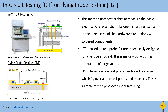In-circuit testing or flying probe testing: this method uses test probes to measure basic electrical characteristics like open, short, resistance, and capacitance of the hardware circuit along with the solder components, using test points available in the hardware. ICT is based on test probe fixtures specifically designed for a particular PCB board — this fixture needs to be created every time for a new PCB board, and is majorly used during production of large volumes. Flying probe testing is based on a few test probes with a robotic arm which fly over all the test points and measure. This method can mostly be reused for any PCB board and is suitable for prototype manufacturing where the volume is very low.